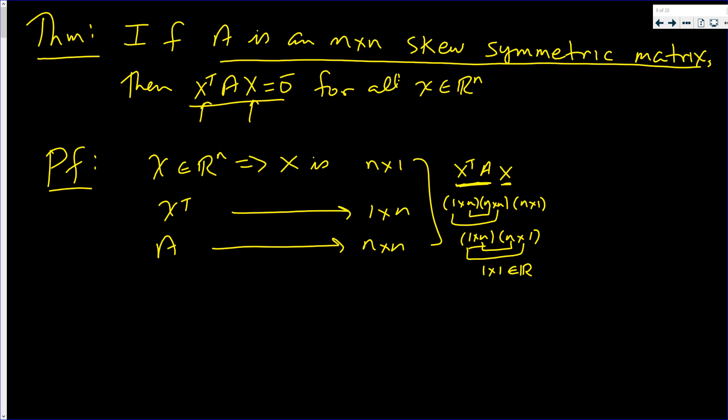So now we know that x transpose times A times x is equal to x transpose times negative A transpose times x. And the scalar can come out in front. It's negative x transpose A transpose x.